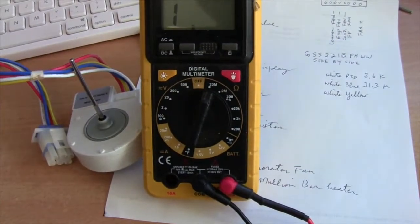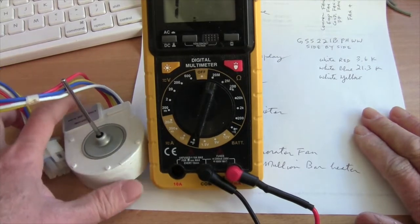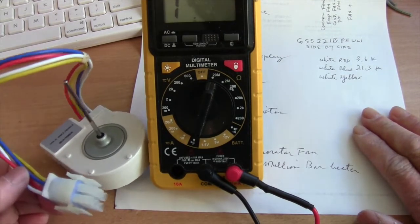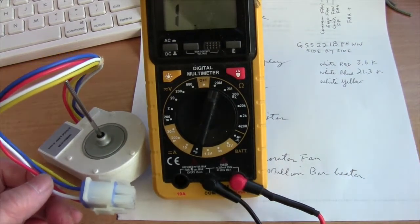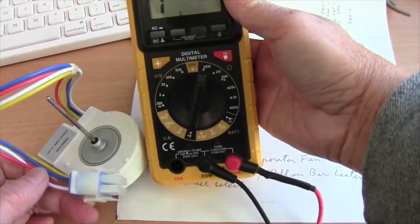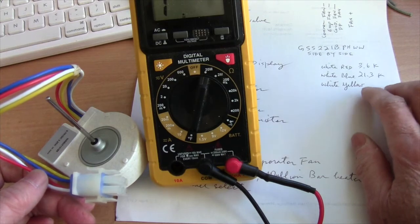So I did that for some of the components. And also for the evaporator fan, I checked out the resistance between the different wires. So if you have a fan motor, you don't know if it's good or bad, if it's shorted out or what, then you can take a look at what I wrote down.